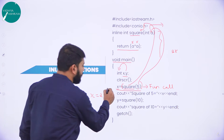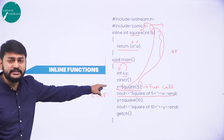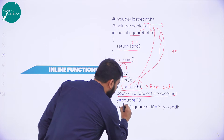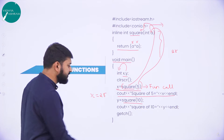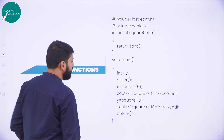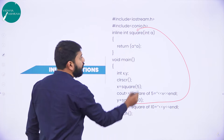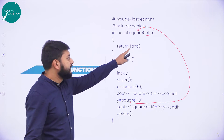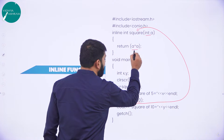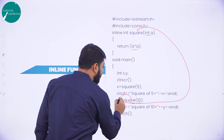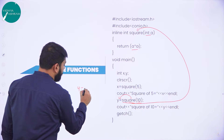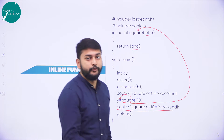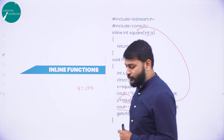I am printing the x value in the cout statement. Then the next function call: square is the name of the function and I am passing 10. So the value of a is 10, and 10 into 10 is 100. This value 100 is returned back and assigned to y. So y value becomes 100 and I print 100. After that I have getch which closes the program. This is how a simple inline program works.